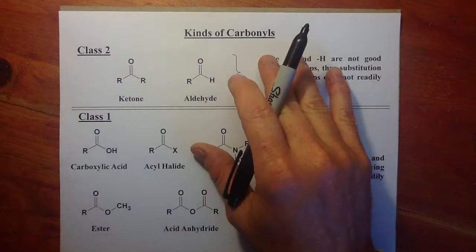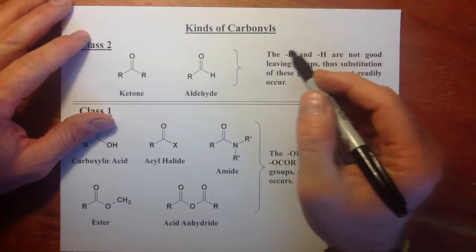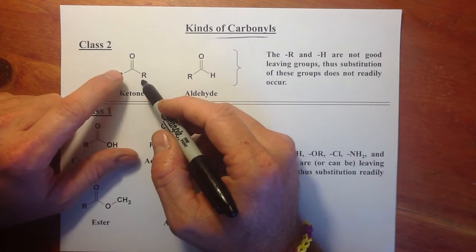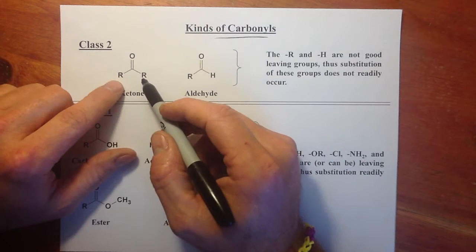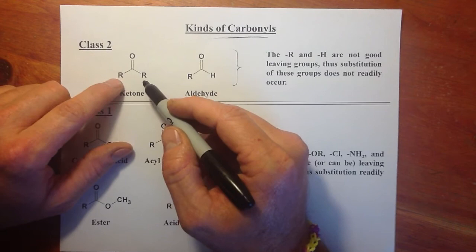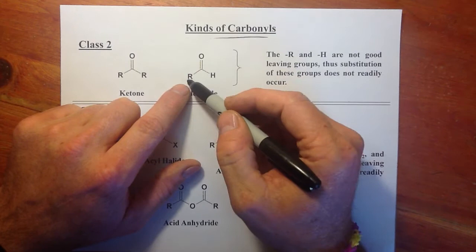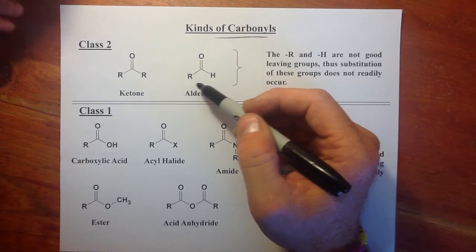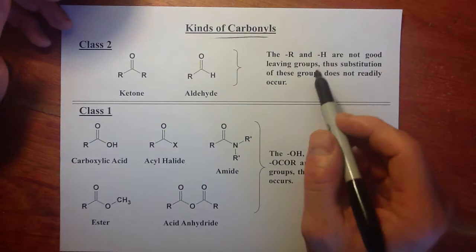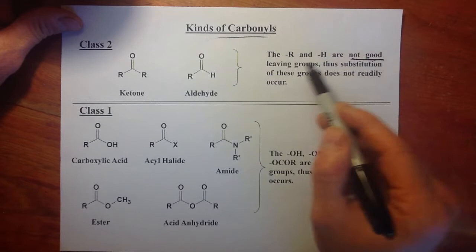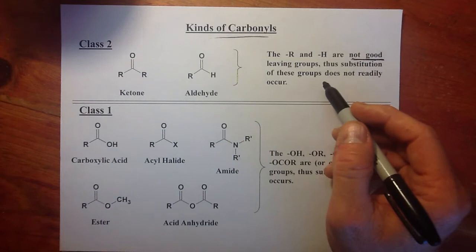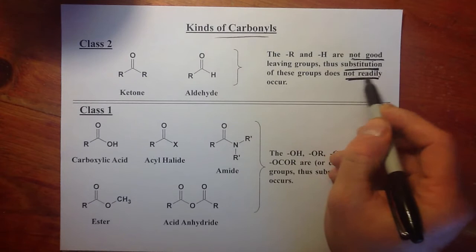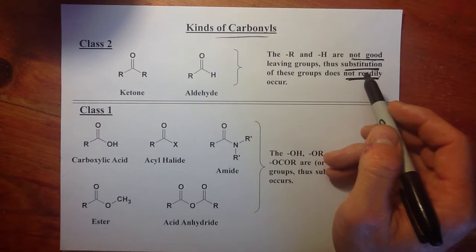What is this discussion of class one and class two carbonyls? It's an important discussion we need to have before talking about any acyl substitution reactions. With a C=O double bond, we can have alkyl groups or hydrogens off it — for example, two methyl groups making acetone, or an H with an R, or even formaldehyde with two H's. If all they are is alkyls or hydrogens off the carbonyl, we call them class two carbonyls, because R and H are not good leaving groups nor can they be made into good leaving groups under acid conditions. Thus, substitution does not readily occur.